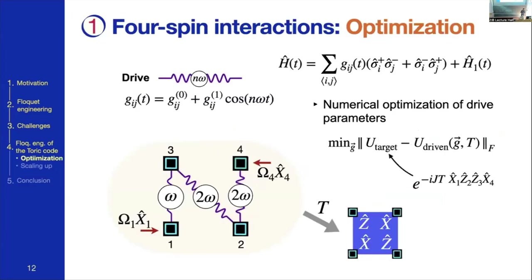The general idea is to decompose the problem: first solve the problem of getting three or four-body interactions in a minimal subsystem, then find a way to scale it up to a larger system. Here is the first part. We want to optimize — and here is my connection to the workshop — to find the best possible driving parameters in our initial simulator Hamiltonian that will lead to an interaction of the desired form. In general we could take arbitrary fields, so to prevent the numerical optimization from blowing up, we need to restrict the number of parameters in a smart way using analytical insights.